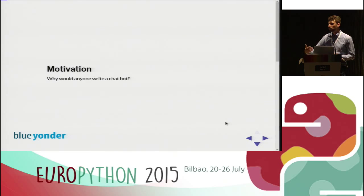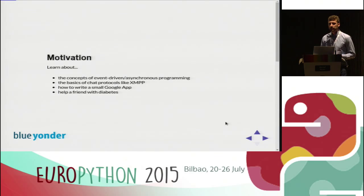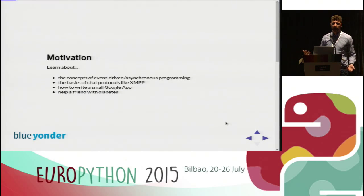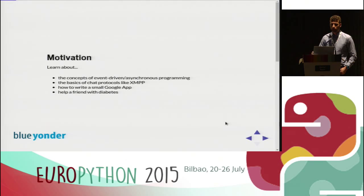He sets an alarm on his smartphone, but it would be really cool if someone reminded him via chat. That's how the idea was born: write a little bot using Google Talk, Facebook, or any chatting engine to remind him to take his long-acting insulin and wait for an answer confirming he really did it. It was also good for me as a use case to learn about event-driven and asynchronous programming, XMPP, and writing a Google app — in the end I used Google Hangouts.